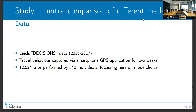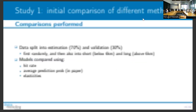The data we're using is a GPS dataset collected in Leeds in 2016-2017, where people were given a smartphone app that tracked them for two weeks - every time they were moving. It then asked questions about where they were going, why, and how they got there. We're using data from 540 individuals tracked over two weeks, and we're looking at their mode choice - modeling what mode they're using for each trip.